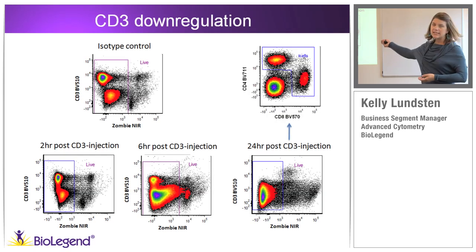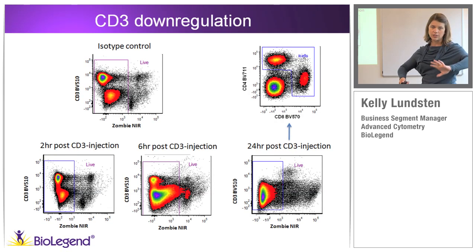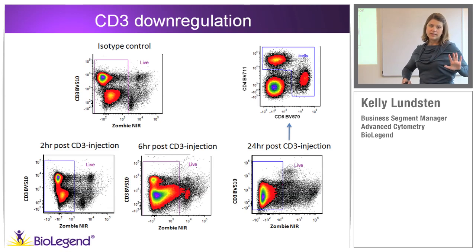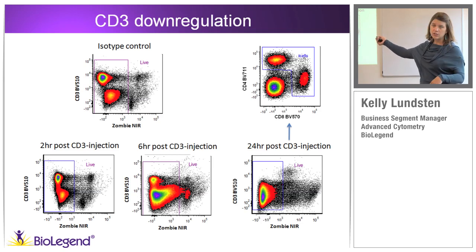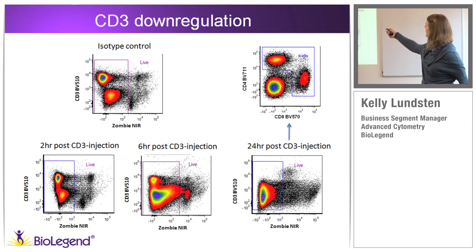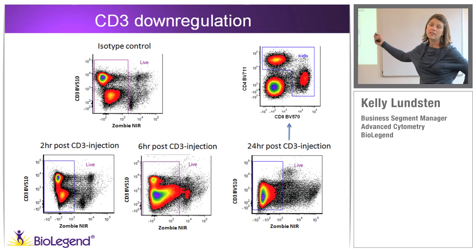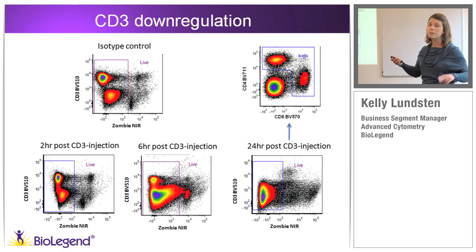We needed to assess that CD3 downregulation wasn't influencing the distribution of our CD4 versus CD8 populations — and it absolutely was not. The 24-hour plot of CD4 versus CD8 looks absolutely gorgeous using BV570 and BV711 in that bivariate — two fluorophores that do not have a lot of spillover into one another.